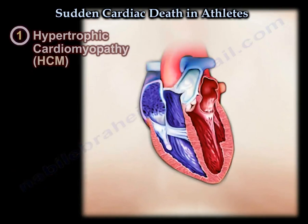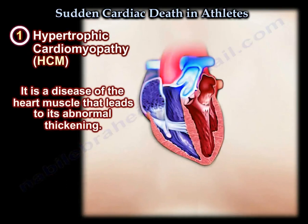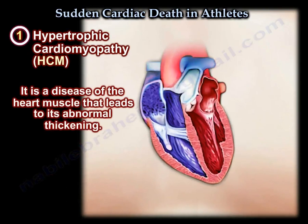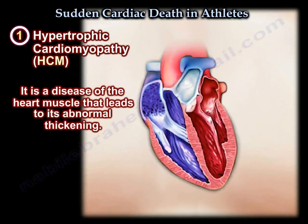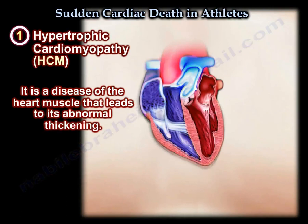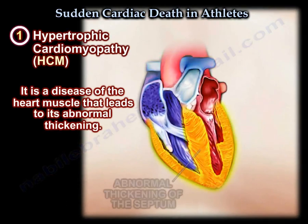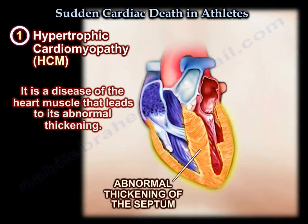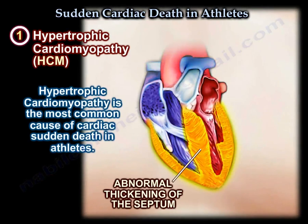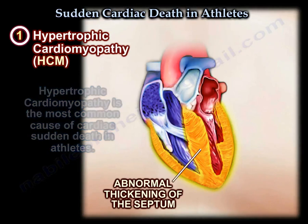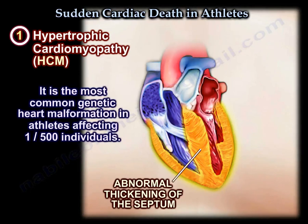Hypertrophic cardiomyopathy is a disease of the heart muscle that leads to its abnormal thickening. You can see here its abnormal thickening of the septum. Hypertrophic cardiomyopathy is the most common cause of sudden cardiac death in athletes. It is the most common genetic heart malformation in athletes, affecting one in 500 individuals.